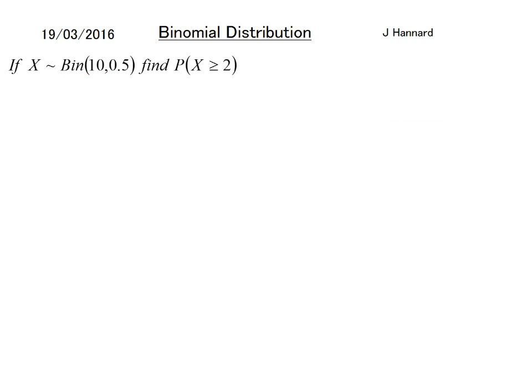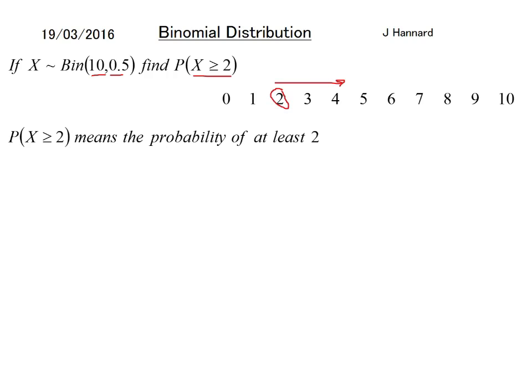But here we go. This is a very generic one. If X can be binomially distributed 10, 0.5, then find the probability of X being at least 2. So draw yourself a number line. If you grab 2 and you want to be more than 2, so we want all of those numbers there.